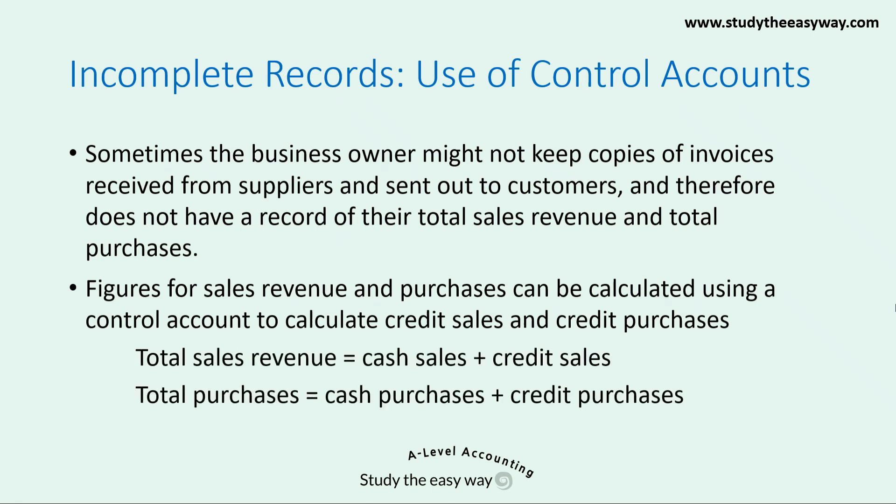Total sales revenue is equal to cash sales plus credit sales, and total purchases are equal to cash purchases plus credit purchases. Once these have been calculated, figures are then available to put into an income statement.